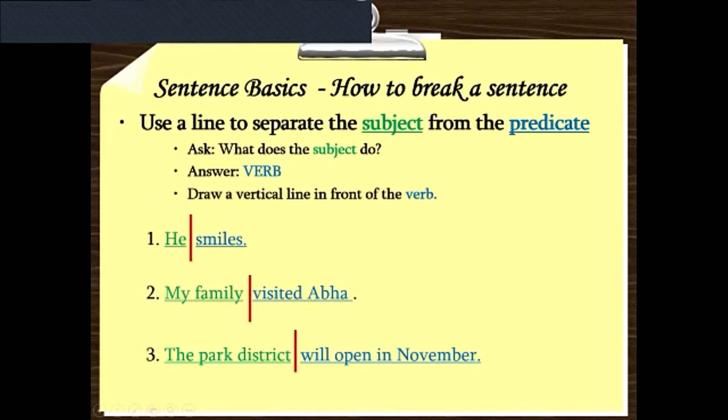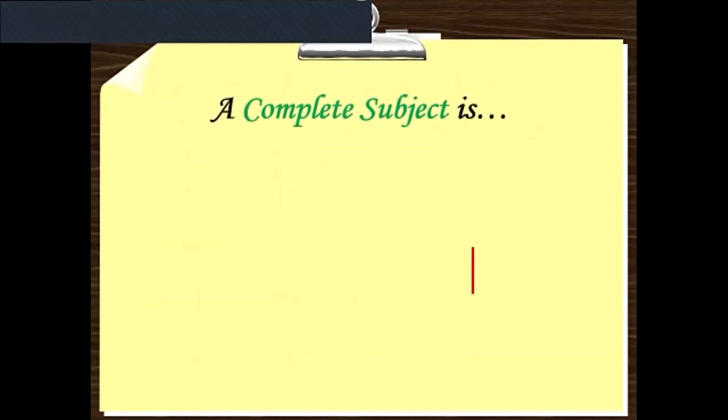Number two: 'My family visited Abha.' The subject here is 'my family,' and the predicate is 'visited Abha.' Why? Because my family did that action, visited. So it visited Abha, it's a predicate. Number three: 'The park district will open in November.' The park district is the subject, and because it will open in November, this is the predicate, the action which will happen.